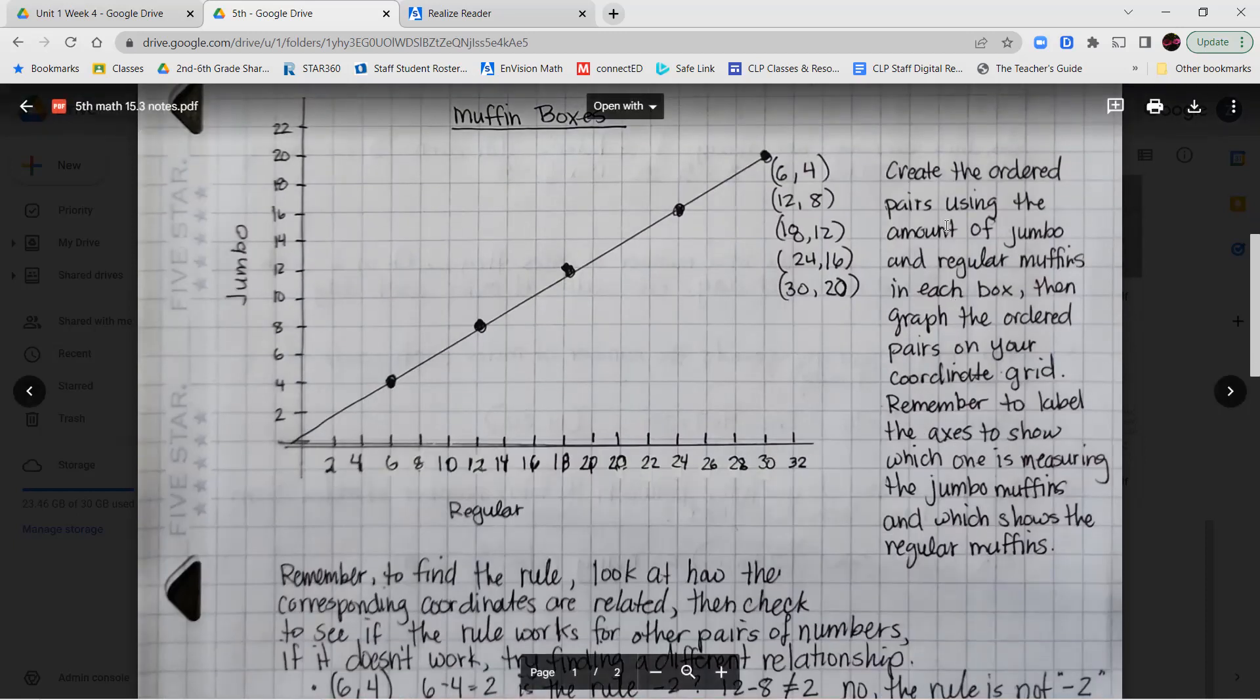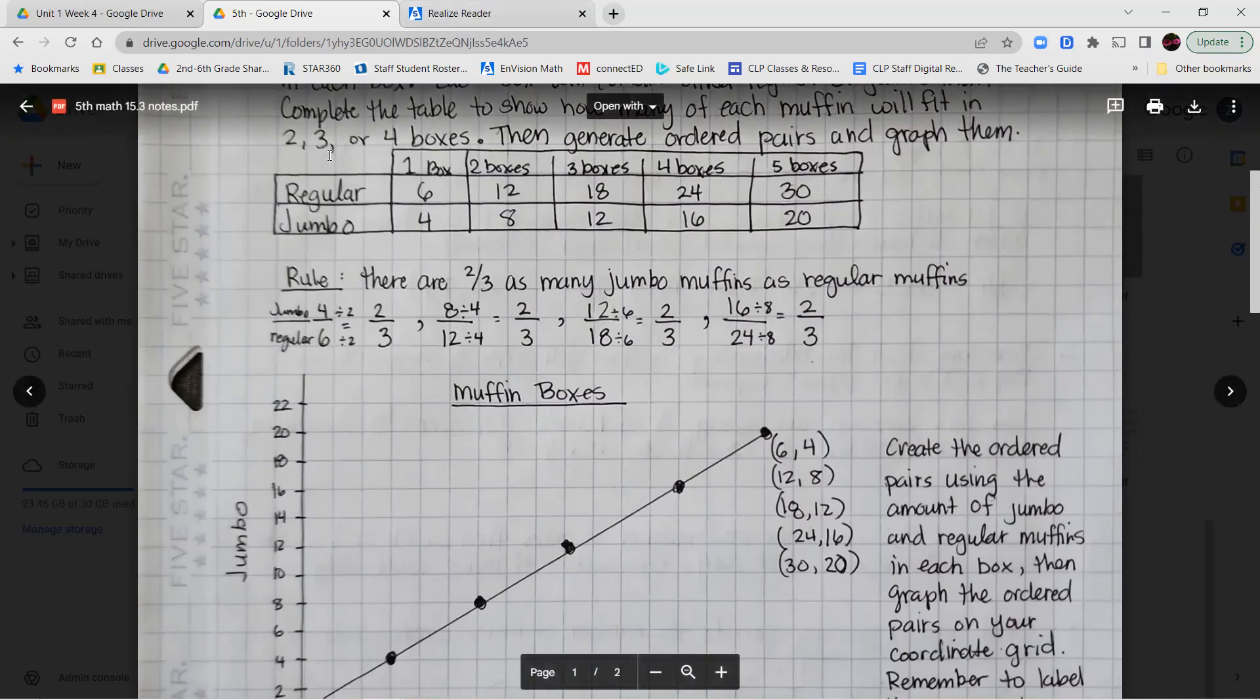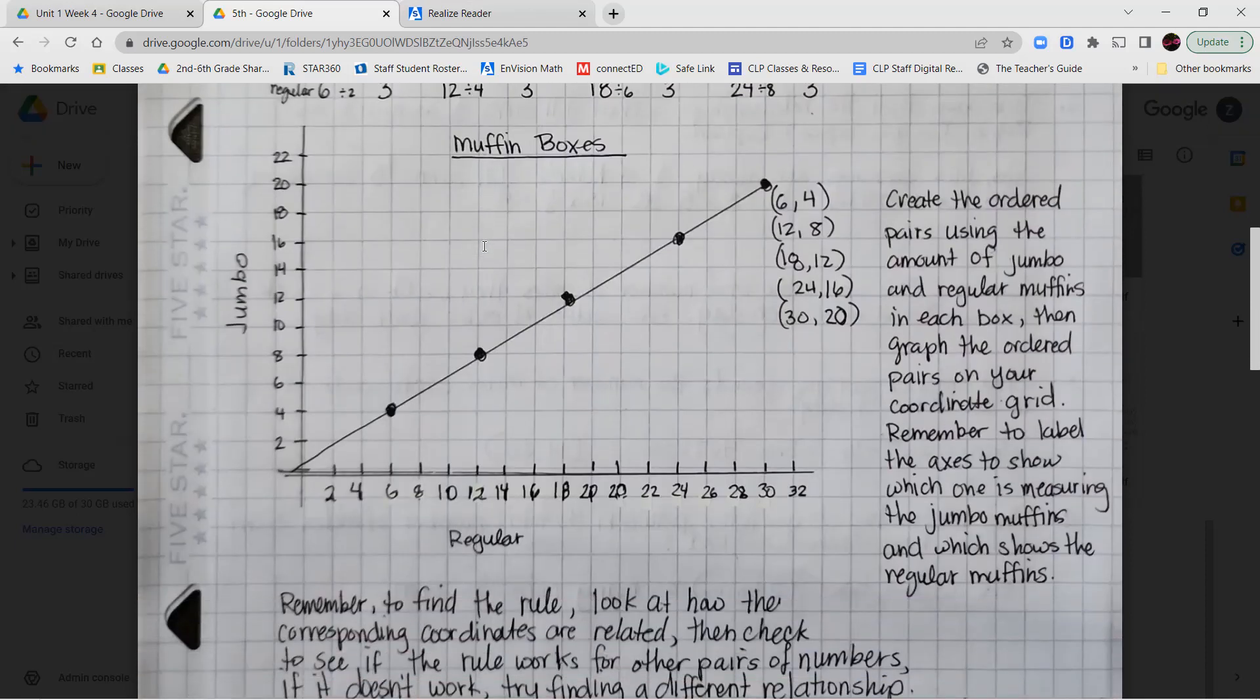So we created the ordered pairs using the amount of jumbo and regular muffins in each box. So we use the information here in our data table. Then we graph them as ordered pairs on the coordinate grid. Now remember to always label your axes to show which one is measuring which. So I had to tell you which one was measuring the regular and which one was measuring the jumbos. And you add a title to your coordinate grid so that you know what your graph is about.